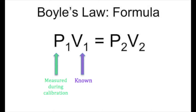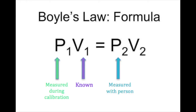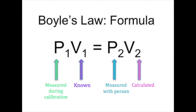Since the Bod Pod already took measurements of baseline pressure and volume, which are P1 and V1 in our base equation, and now has a measurement of the pressure in the chamber with the subject sitting inside the chamber, which is P2, a quick rearrangement of Boyle's Law gives a result for the volume of the subject, which is V2.